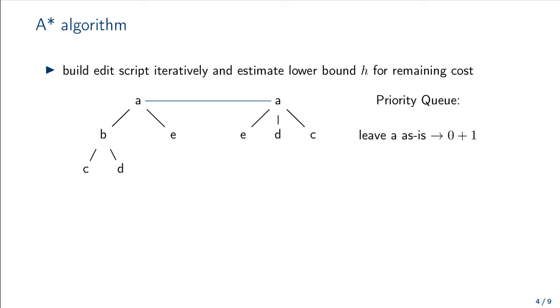Next, we pull the top entry from the priority queue, and consider all possible edits we could apply to B. First, we could delete B. Our lower bound for the remaining edit distance is 0, because we could just swap C, D and E around, such that they match with E, D and C on the right. We put that option back onto our priority queue.